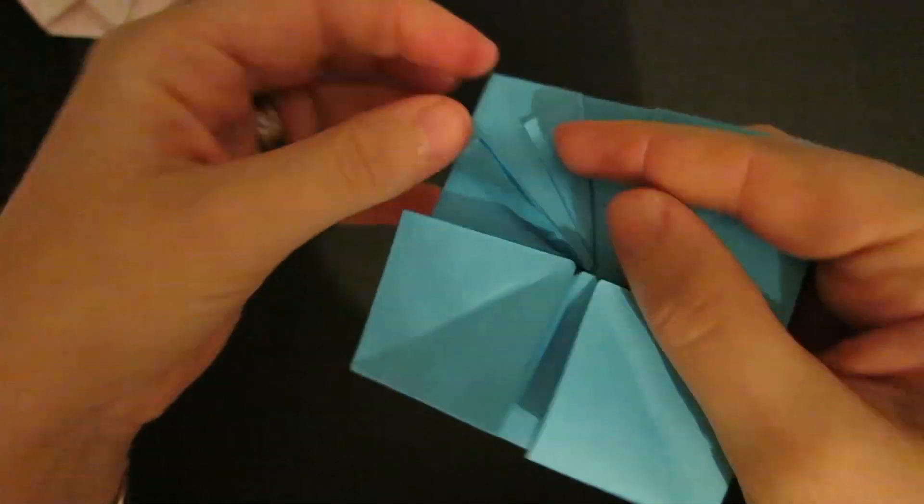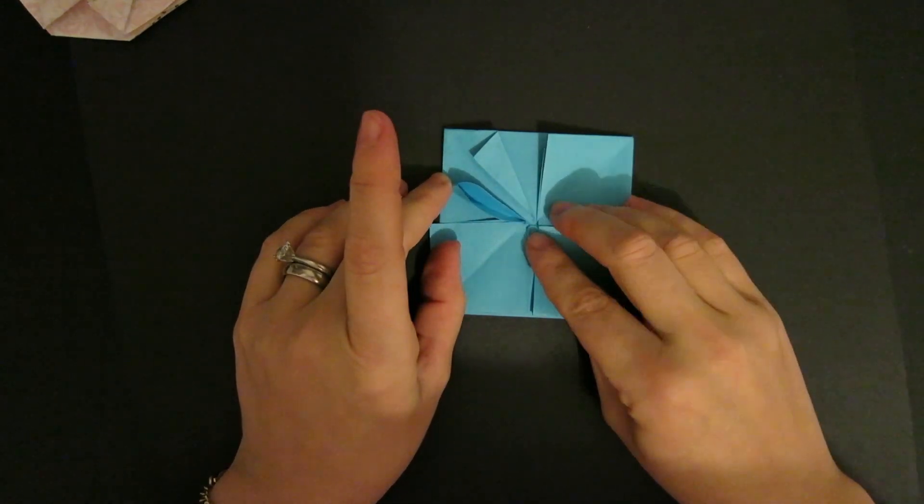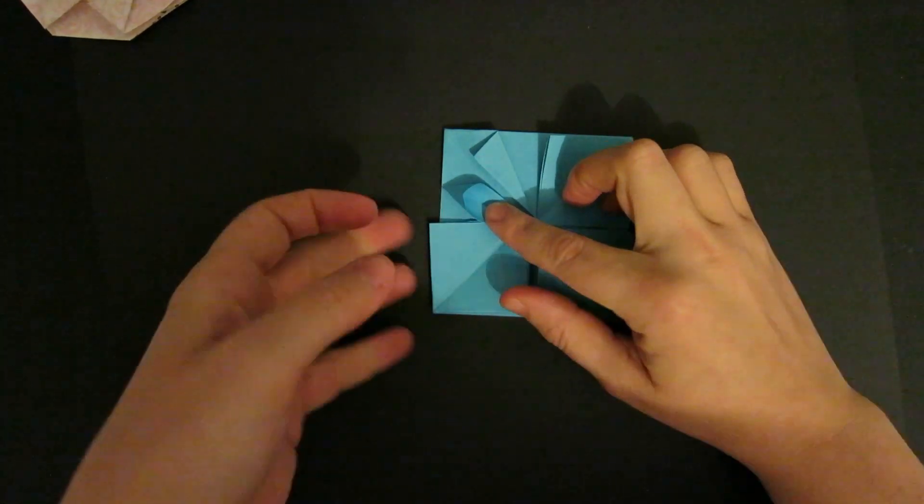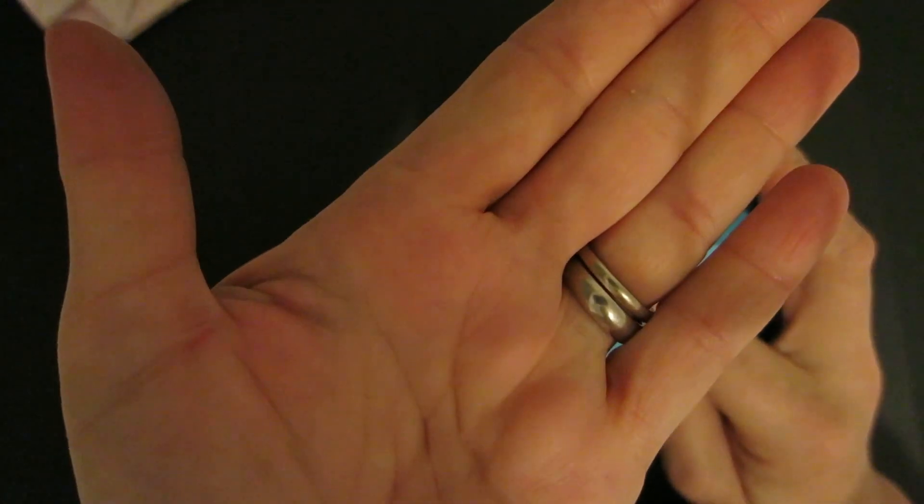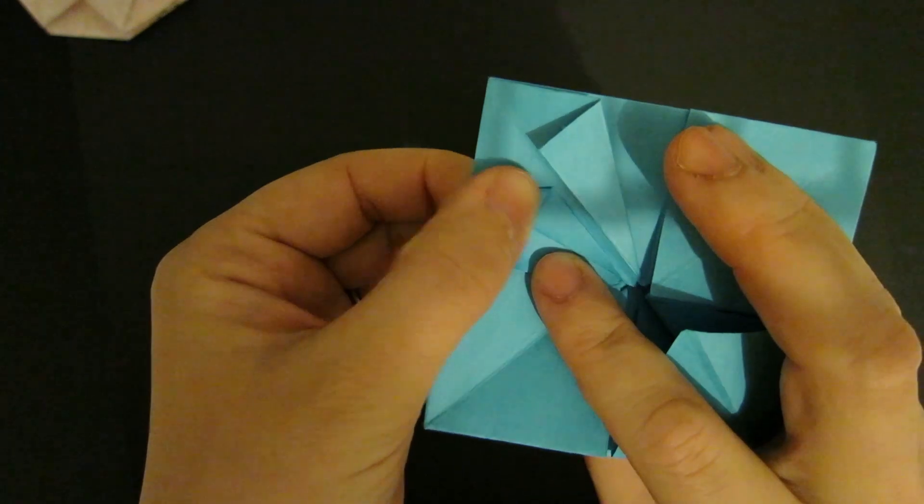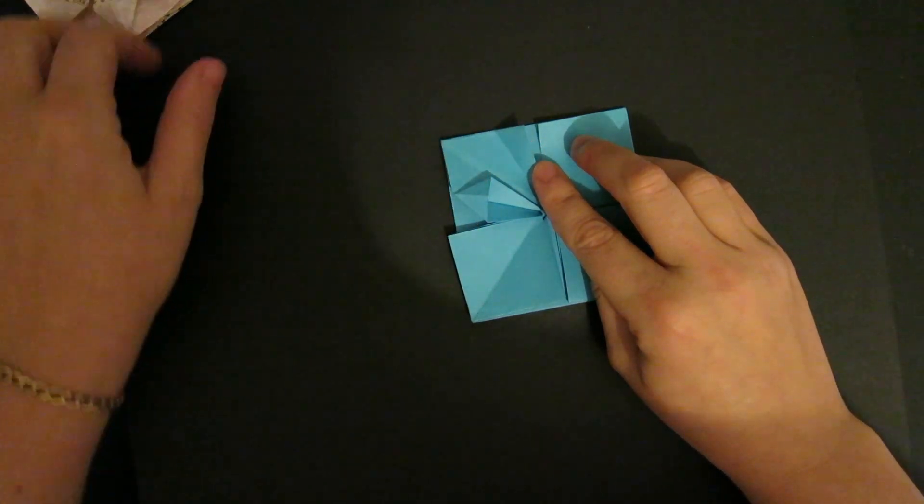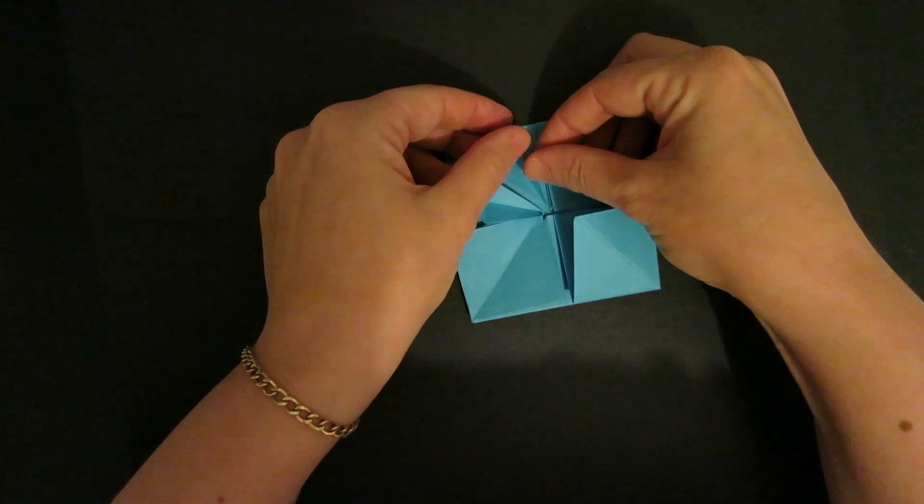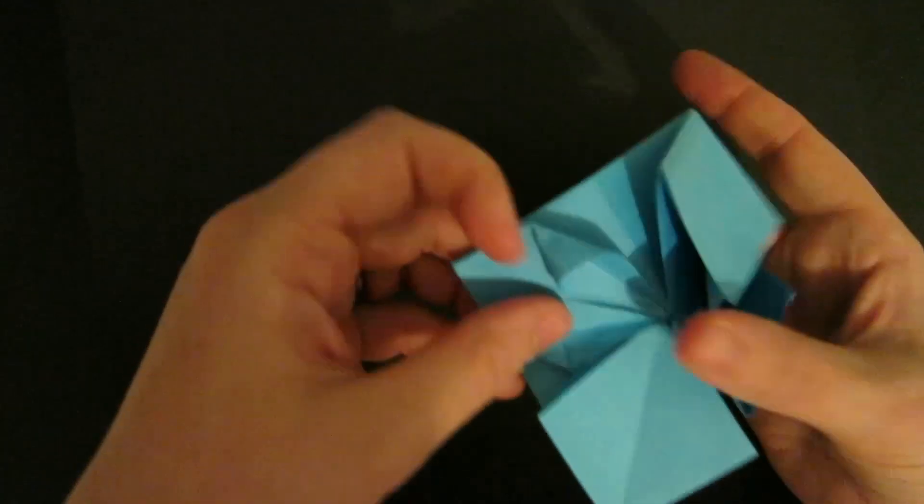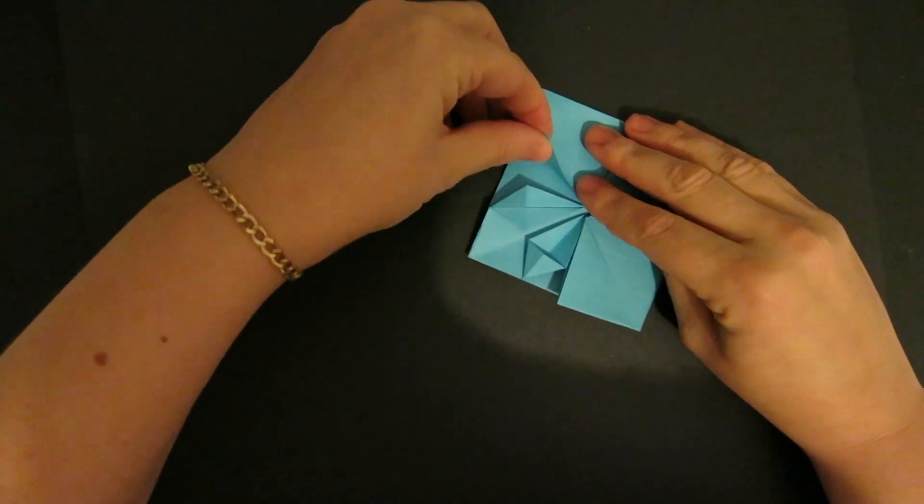Now for each one of these flaps you're going to pick it up like a shark fin just like we did before so it's standing straight up. You're going to put your finger on the middle just like we did before and the gap here might be a little trickier because it's not square but it's the same idea. Insert your finger into the gap pressing down with the other hand lining up the crease that's on top with that center crease and do the same on the other side. Now you're going to repeat that for each one of these around and we're almost done.